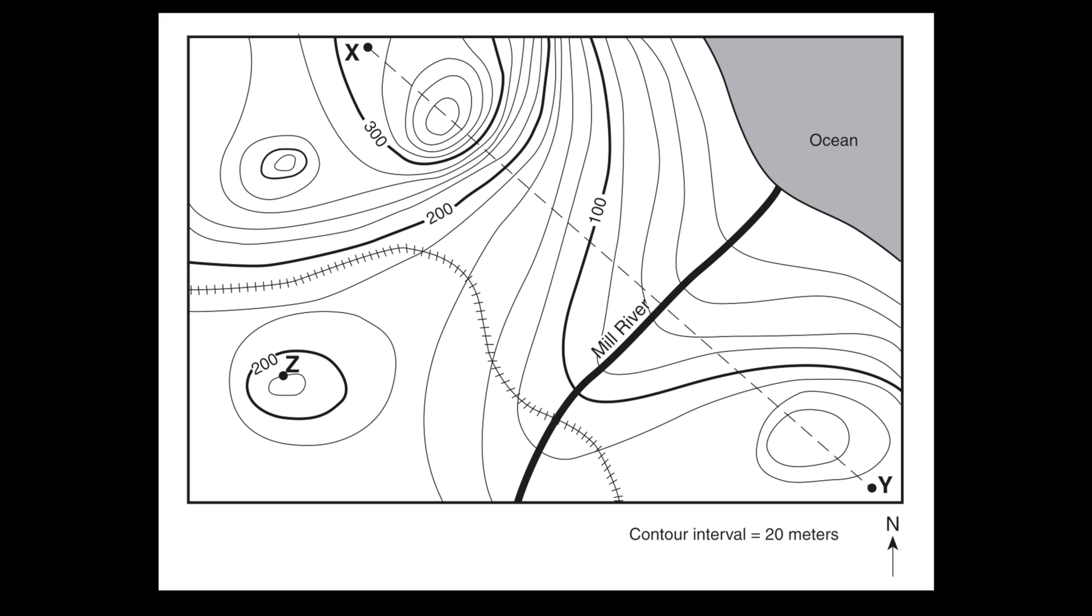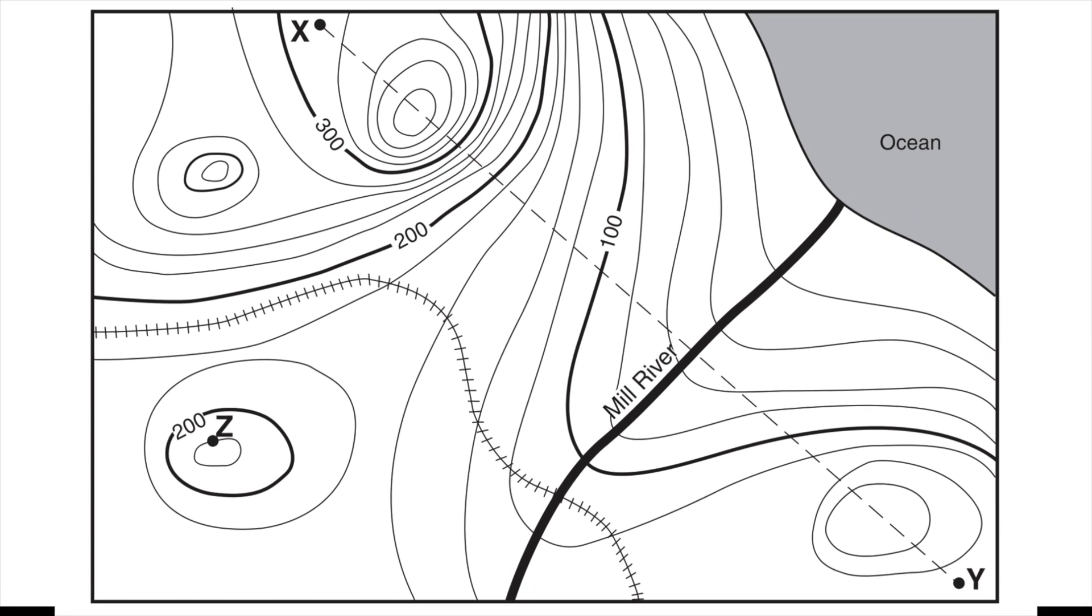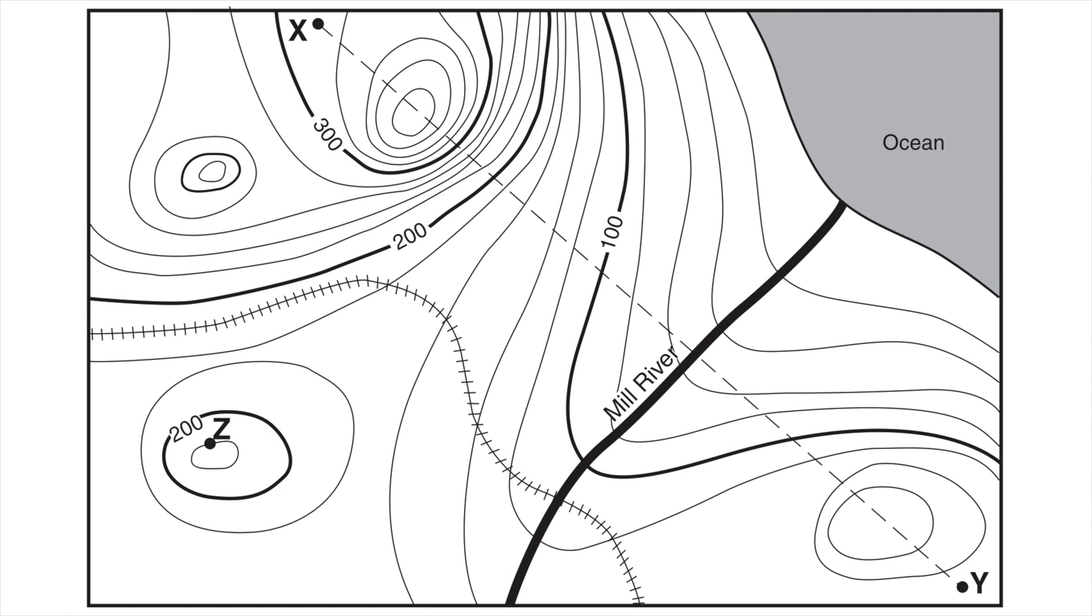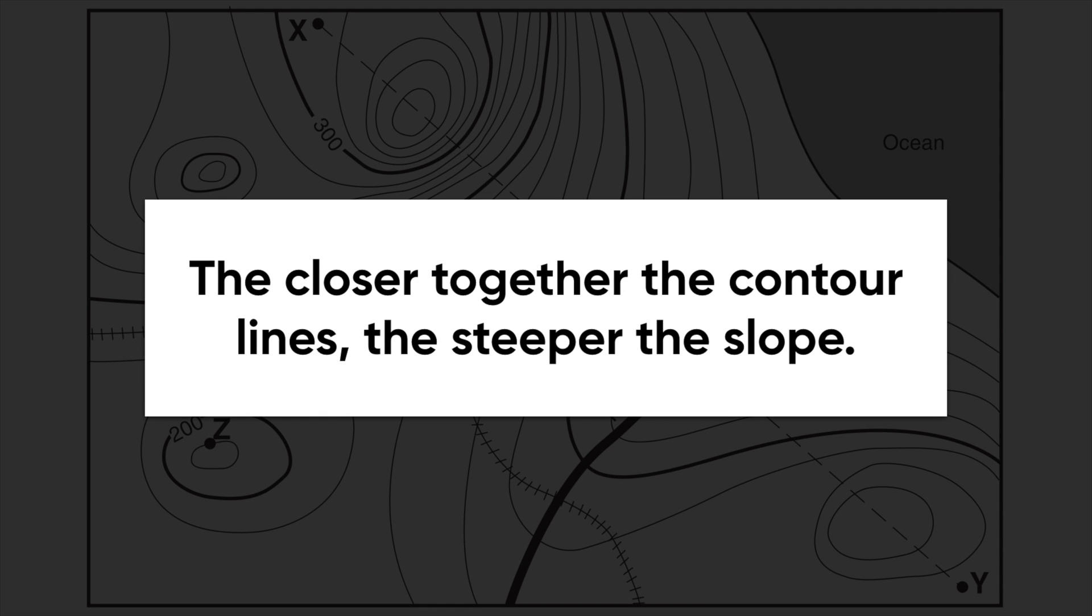So if I want to find on a map like this, where is it really steep? Where would I see a cliff or a really steep slope? What I'm looking for is an area where there's a big change in elevation. And if I want to see a big change in elevation, I'm looking for where there are a lot of contour lines that are close together. And so this is really the rule that we're going to follow. The closer together the contour lines, the steeper the slope.